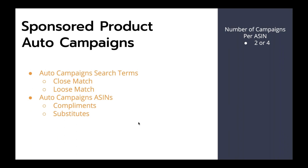Sponsored product auto campaigns — one of the most basic ad types, everyone's aware of them, anyone can run them. Auto campaigns are now broken out into four different targeting types: close match, loose match, complements, and substitutes. Two of them influence search terms, two influence ASINs. If your ad shows up on the product detail page underneath an ASIN in sponsored products related to, it's going to show up in your search term report with the ASIN you converted on, driven from complement or substitute targeting. Close match and loose match work within the SERP. For every single ASIN, we recommend running an auto campaign because it's evergreen keyword research and product research.